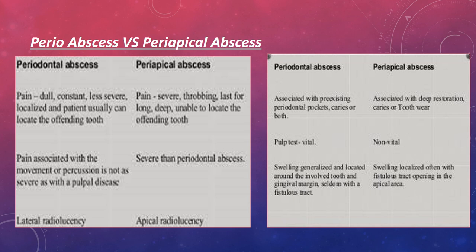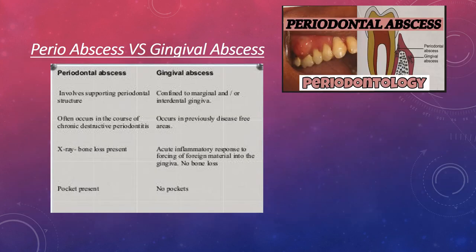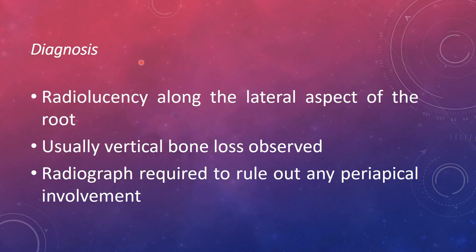Swelling in periodontal abscess is generalized and localized around the involved tooth and gingival margin, seldom with a fistula, whereas periapical abscess swelling is localized with a fistula opening in the apical area. Comparing periodontal and gingival abscess: periodontal abscess involves supporting periodontal structures, while gingival abscess is confined to the marginal and interdental gingiva. Periodontal abscess occurs in the course of chronic destructive periodontitis; gingival abscess occurs in previously disease-free areas. Bone loss is present in periodontal abscess on X-ray, absent in gingival abscess. Periodontal pockets are present in periodontal abscess; gingival abscess has no pockets.